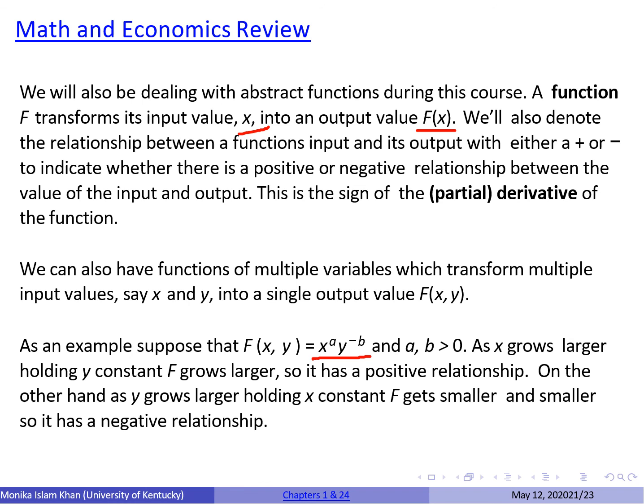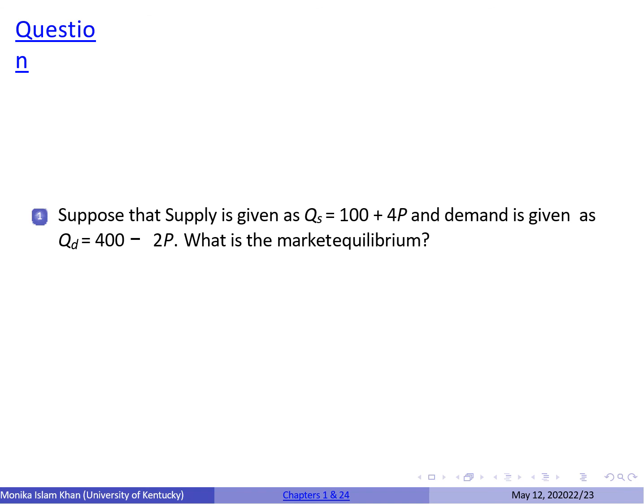An example would be f(x, y) = x^a · y^{-b}. We need to understand the relationship between x and f(x, y), and between y and f(x, y). As x grows larger, f(x, y) also grows larger — a positive relationship. However, if y is increasing, f(x, y) gets smaller and smaller — so the relationship between y and f(x, y) is negative.